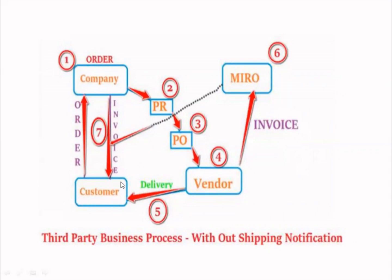Whenever the customer orders some product to the company, the company will raise a purchase order to the external vendor. The vendor will deliver the product to the customer. The vendor then charges the amount to the company. Since the vendor is delivering to the customer but we are ordering it, the company needs to pay the vendor. The vendor raises an invoice to the company, and based on that invoice, the company raises an invoice to the customer. The customer pays the company, and we pay the vendor.